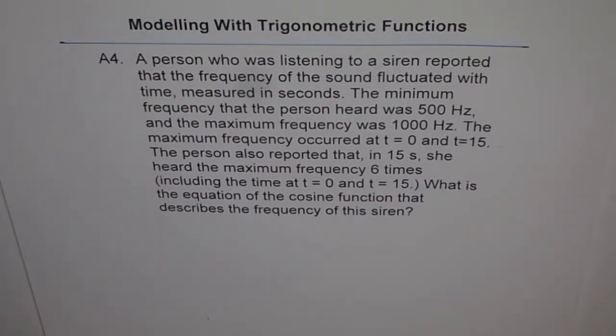The minimum frequency that the person heard was 500 Hz and the maximum frequency was 1000 Hz. The maximum frequency occurred at t equals 0 and t equals 15. The person also reported that in 15 seconds she heard the maximum frequency 6 times including the time at t equals 0 and t equals 15. What is the equation of the cosine function that describes the frequency of this siren?